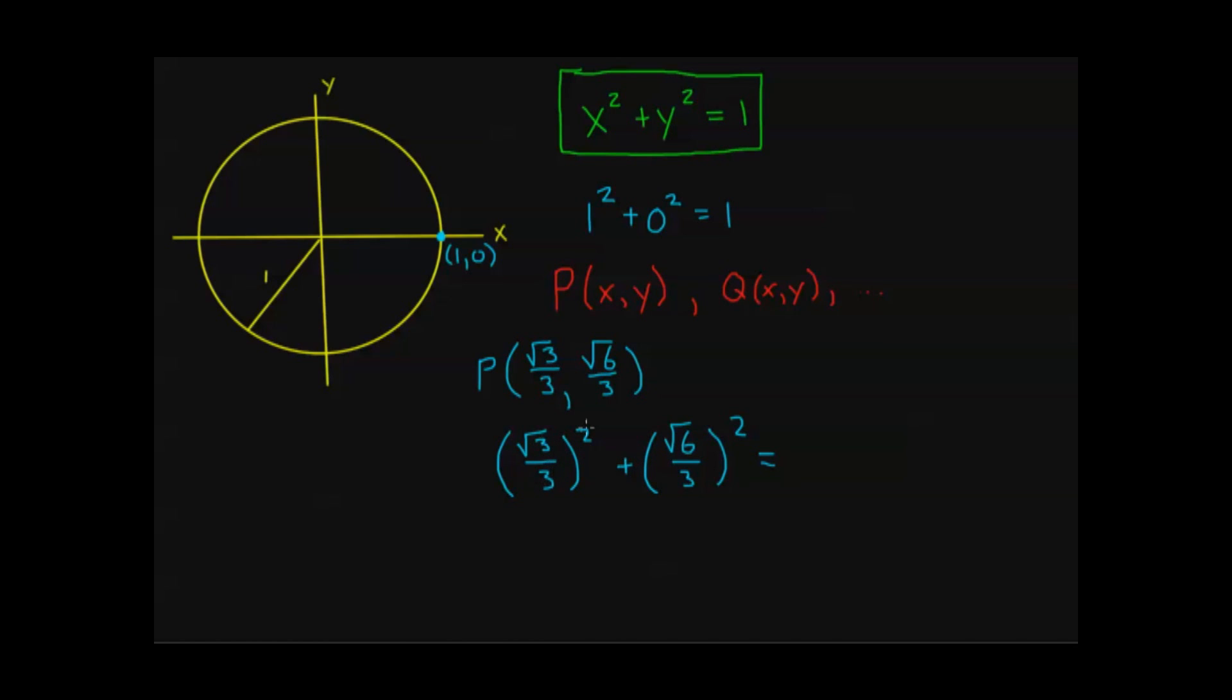So square root of 3 over 3 squared. Remember, I'm going to square the top and the bottom. So root 3 on the top squared is just 3. And on the bottom, 3 squared is 9. So I have 3 over 9 plus. And then here my root 6 over 3. Similarly, I get 6 on the top and 9 on the bottom. So that's 6 over 9. Now 3 over 9 plus 6 over 9 equals 9 over 9, which of course equals 1. So this point P is on the unit circle. And in fact, P is going to be somewhere right over here.